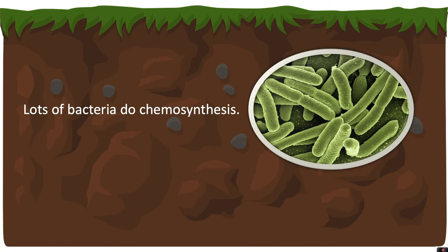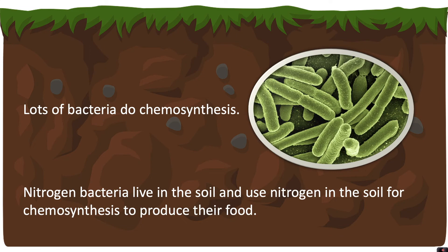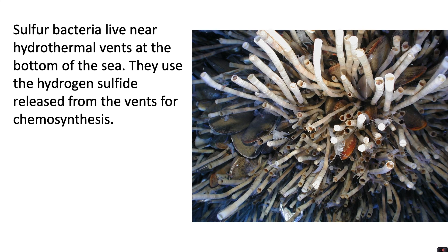Lots of bacteria do chemosynthesis. Nitrogen bacteria live in the soil and use nitrogen in the soil for chemosynthesis to produce their own food. Sulfur bacteria live near hydrothermal vents at the bottom of the sea and use the hydrogen sulfide released from the vents for chemosynthesis.